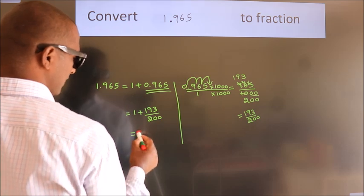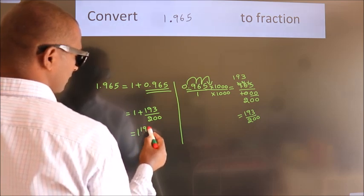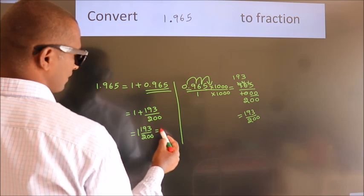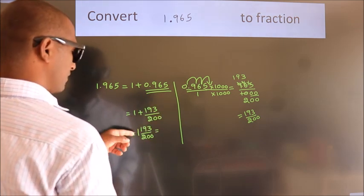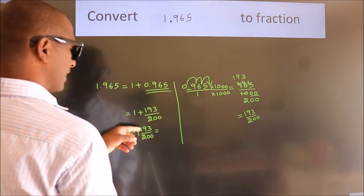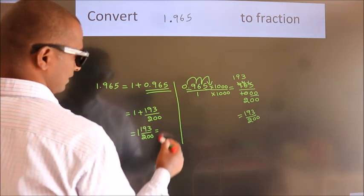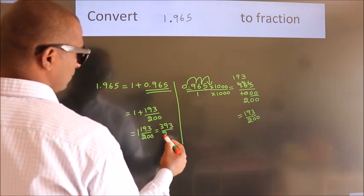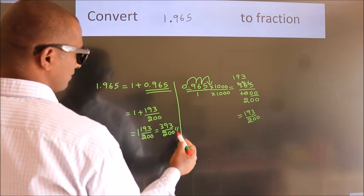In mixed fraction it is 1 and 193 over 200. And in improper fraction it is 1 into 200, 200 plus 193, equals 393 by 200 is our fraction.